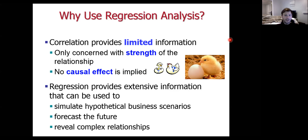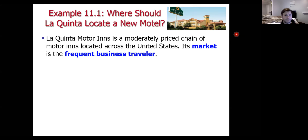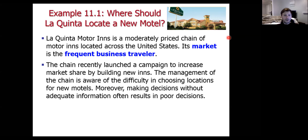We're going to look at La Quinta Inn's decision about where to locate a new motel. La Quinta Motor Inns is a moderately priced chain of motor inns located across the U.S., and its primary market is the frequent business traveler. The chain recently launched a campaign to increase market share by building new inns. Management is aware of the difficulty in choosing locations — once you choose a location, you're locked in when building begins. It's not easy to move a hotel, and making decisions without adequate information often results in poor outcomes.